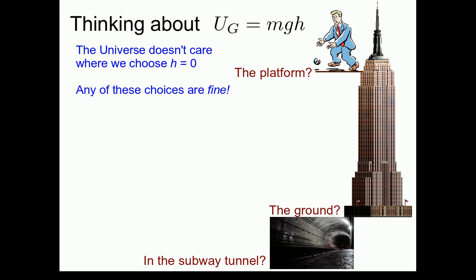So due to that, any of these choices, the platform, the ground, the subway tunnel, they're all fine. It doesn't matter which we pick. You should just be very explicit with your choice. So when you're approaching a problem with gravitational potential energy, explicitly write down that I am going to choose the zero of gravitational potential energy to be the platform, for example.